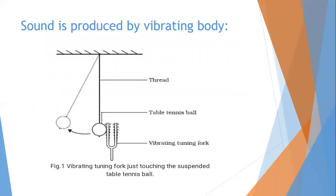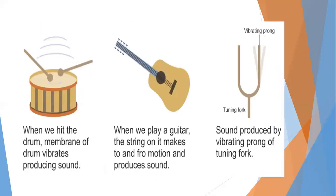Sound is produced by a vibrating body. For example, if we hit a tuning fork with a rubber pad, it vibrates and produces sound. To prove that the tuning fork is vibrating, we touch it with a tennis ball and the ball moves away, showing that the tuning fork is vibrating and producing sound. When we hit a drum, the membrane of the drum vibrates and produces sound. When we play a guitar, the string moves in a to-and-fro motion and also produces sound.